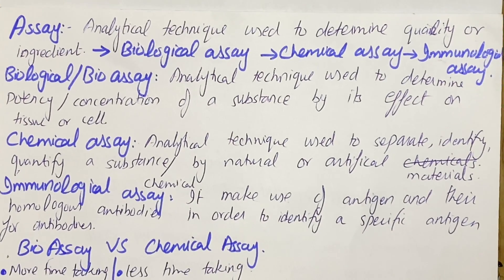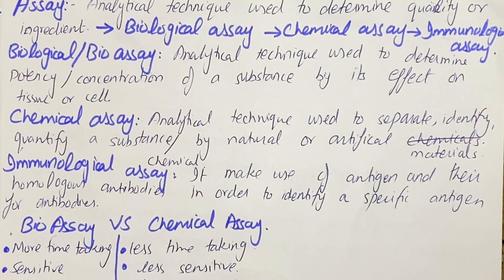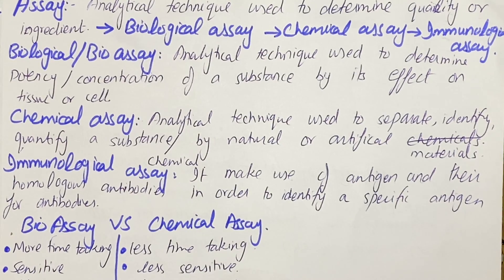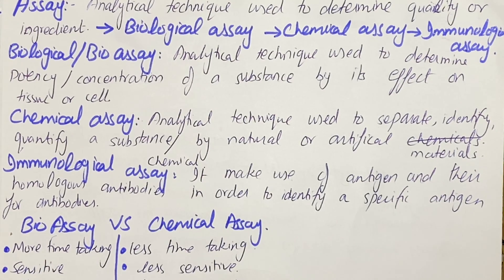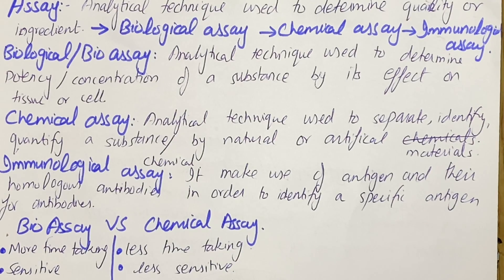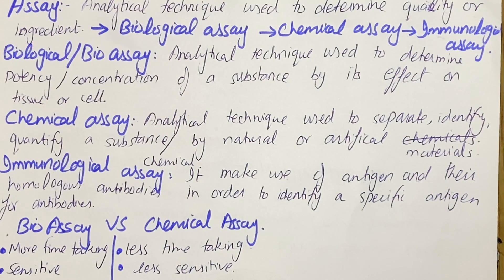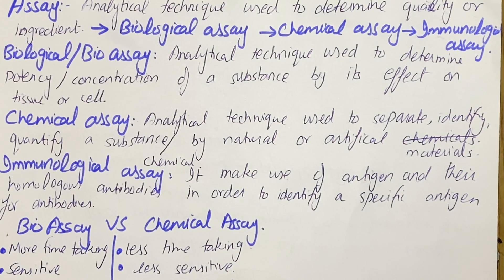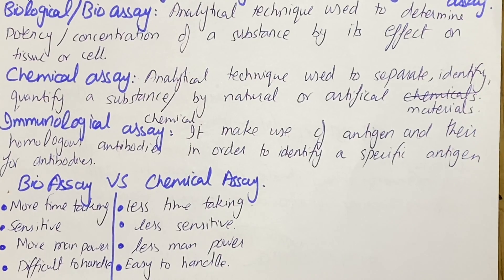Now there are certain differences between bio assay and chemical assay. First of all, bio assay is more time-taking than chemical assay. This is because in bio assay you need results from a living organism, so it takes more time. In chemical assay you just need results from certain chemicals. Regarding sensitivity, bio assays are more sensitive whereas chemical assays are less sensitive.